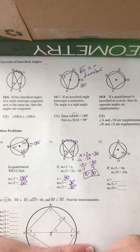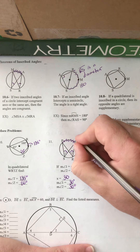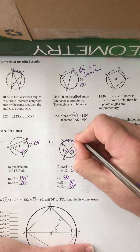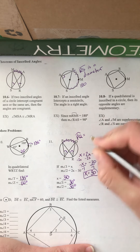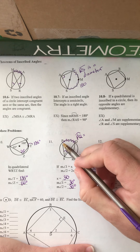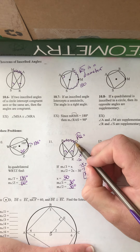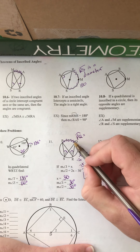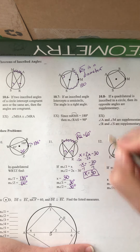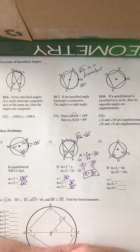A little extension on this problem: what is the measure of arc PQ? If both inscribed angles are 30 degrees, we double it to get the intercepted arc. So arc PQ measures 60 degrees.